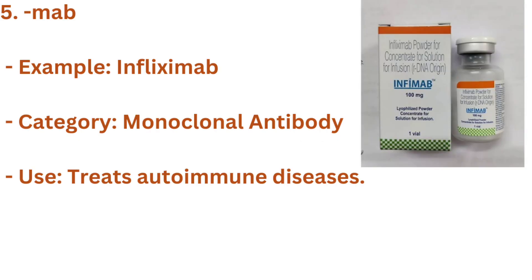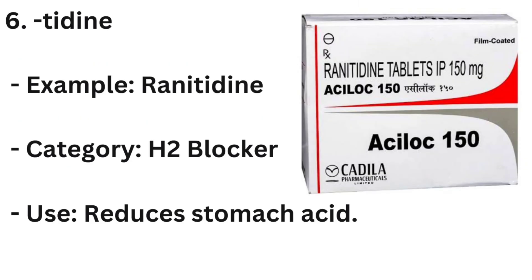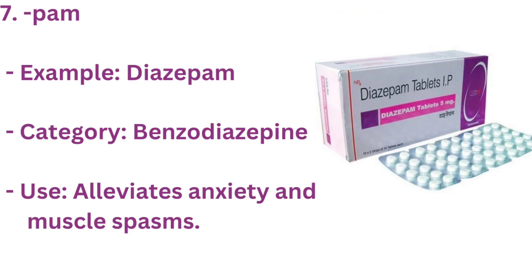5. MAB — Example: INFLIXIMAB. Category: MONOCLONAL ANTIBODY. Use: TREATS AUTOIMMUNE DISEASES. 6. TIDINE — Example: RANITIDINE. Category: H2 BLOCKER. Use: REDUCES STOMACH ACID.